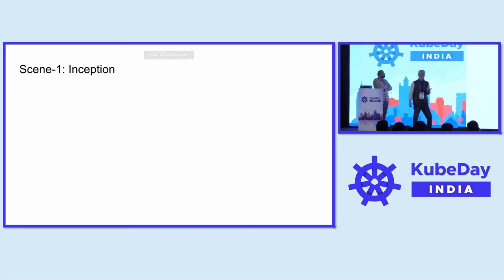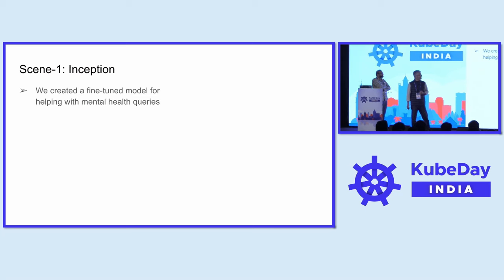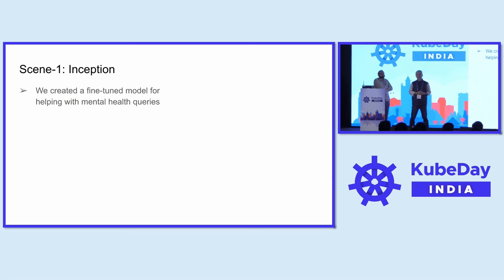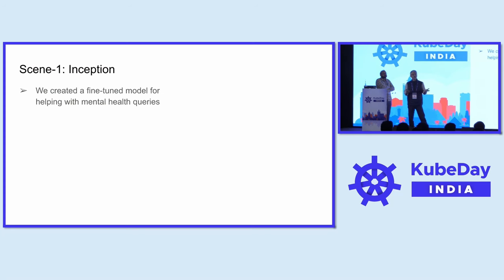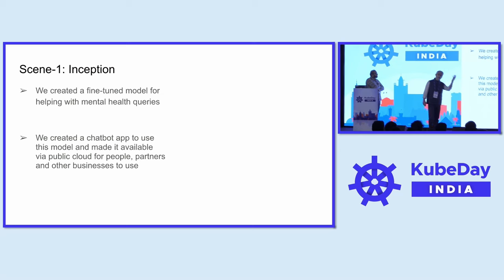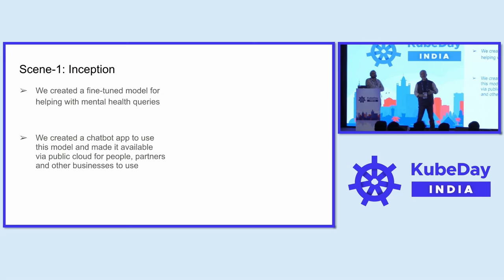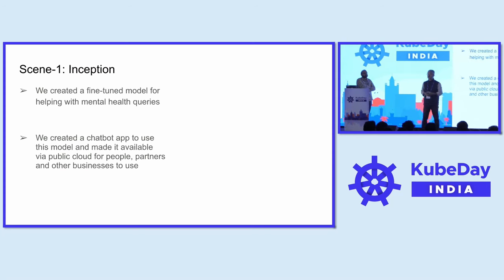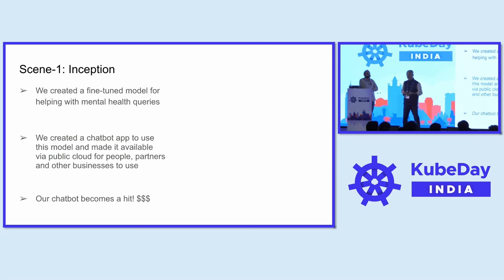Let's start with a story, and hopefully you will be able to connect with this in today's age of generative AI. Let's say we created a fine-tuned model for helping with mental health queries — this could be an open source model fine-tuned with your own data, or a proprietary model. We created a chatbot, published it in public cloud, and deployed it for others to use, whether users or business partners. Our chatbot becomes a hit and we start earning revenue.